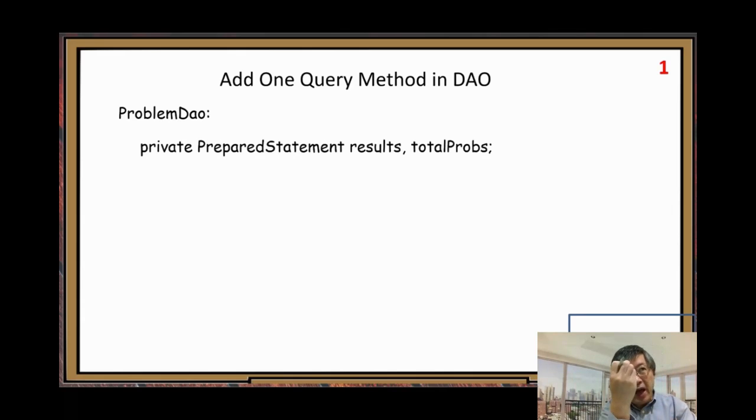The first thing, we need to add that query object, prepared statement object. Every query we need to use this object or another possibility, statement object. Statement object is a super class of prepared statement object. Prepare statement is subclass of statement. Subinterface, actually. Statement is a super interface. Prepare statement is a subinterface. The details, I will explain in animal survey example. But here, you just use it.